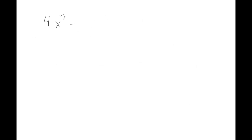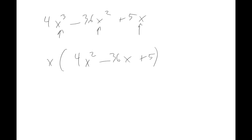Let's say you start with 4x cubed minus 36x squared plus 56x. This is not the regular kind of factoring yet, because it has a common factor and a cube. First you factor out the common factor. Every single term has at least one x, so you can factor out x, leaving 4x squared minus 36x plus 56. But that's not the final result.